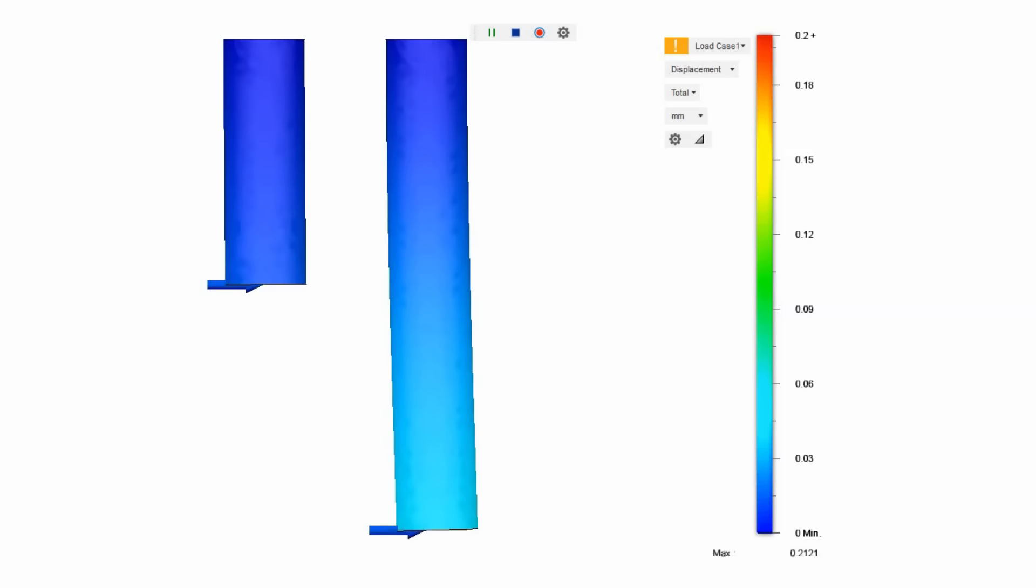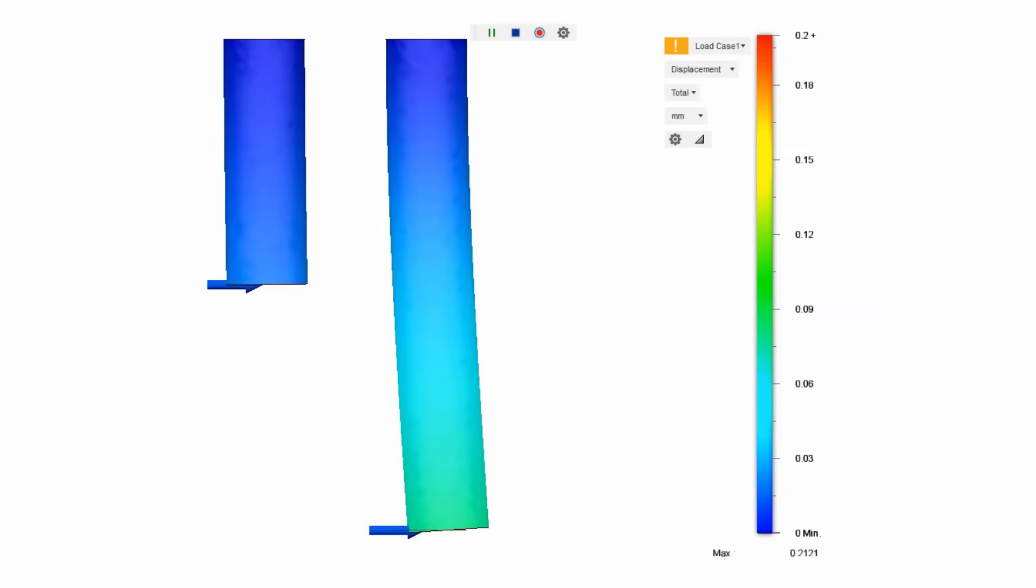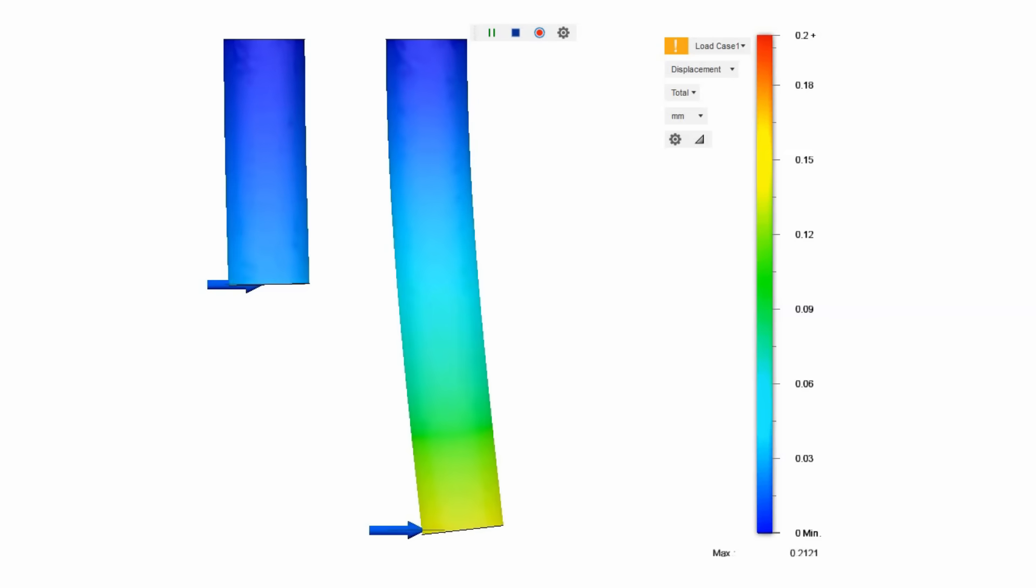This is seen here where both end mills have the same force applied but the one on the right is twice as long resulting in significantly more deflection. This carries into part design where the designer should always be thinking of the length of the end mill that is needed to machine the feature drawn. Short end mills with large diameter will give the fastest machining time which will result in the most cost effective part.